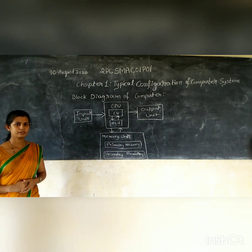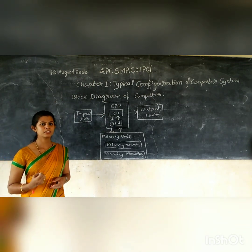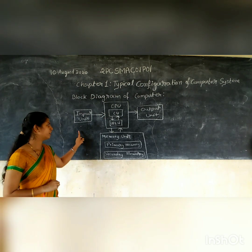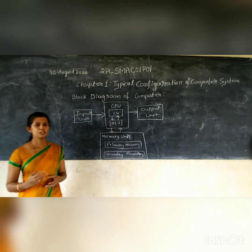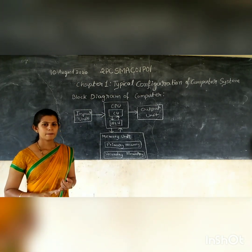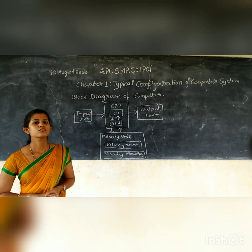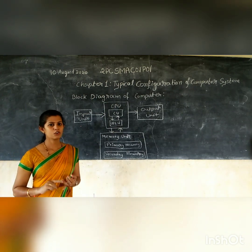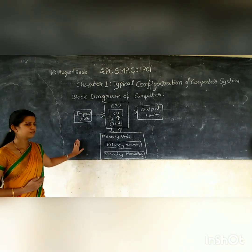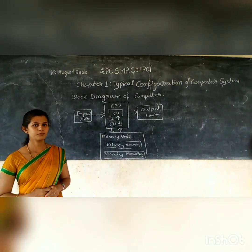First is input unit. In order to perform tasks or any operation, the computer must receive some instructions. These instructions will be received by the input unit. For example, in your laptop or personal computer, you may have any number of audio files or video files, but they don't play by themselves — we give instructions via mouse or keyboard, and then the video or audio file will play. Like that, the input unit links the external world with the computer system.